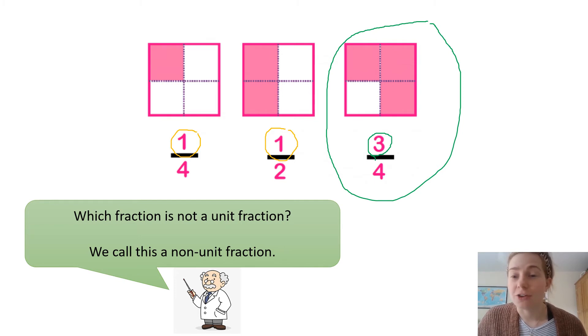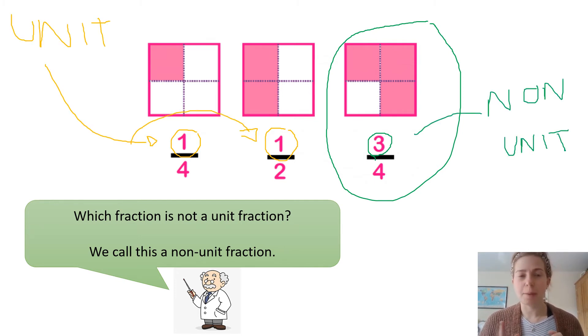One half and one quarter both have one as the numerator. So, they are unit. So, just remember, when we talk about unit, the numerator is always one. When we talk about non-unit, the numerator is any other number.